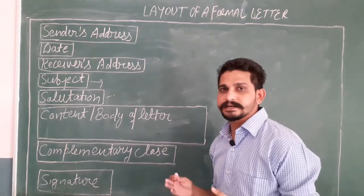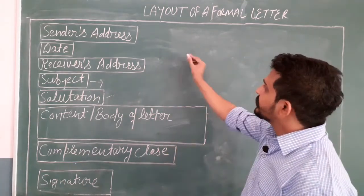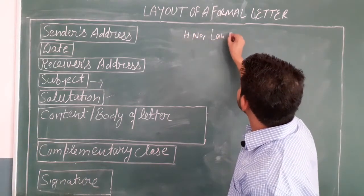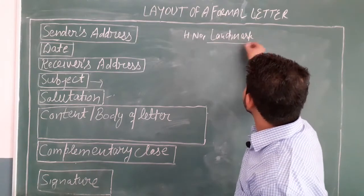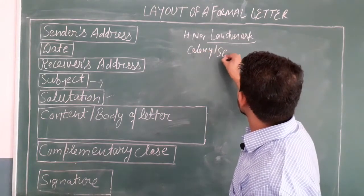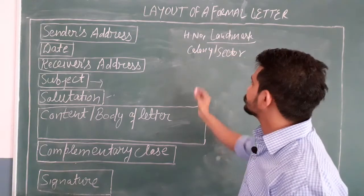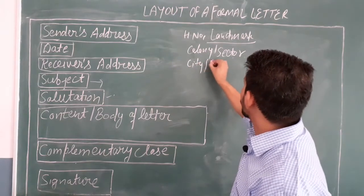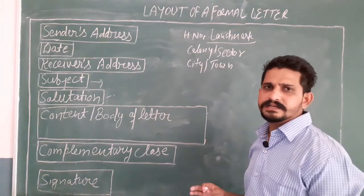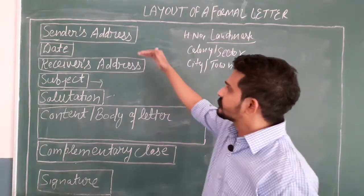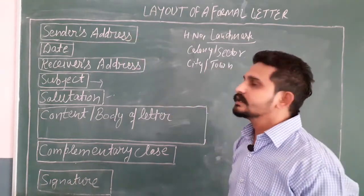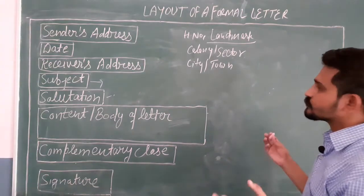The sender's address — the one who is sending the letter — you have to write there. It may include house number, landmark, colony or sector, and city or town. Generally this is written in three lines. After that, leave one line after the sender's address and then write the date.